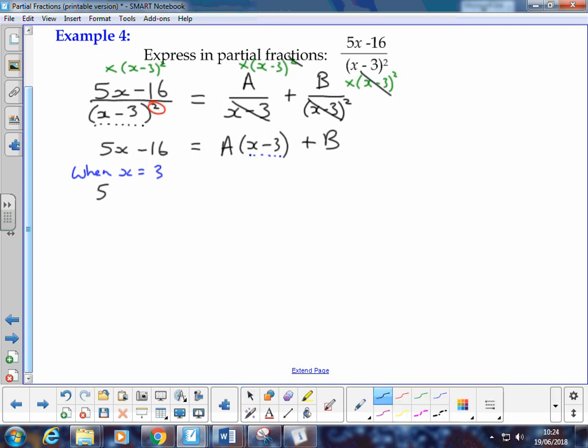When x is 3, we've got 5 times 3 minus 16 on the left, and on the right-hand side, the A times (x - 3) goes to 0, because 3 minus 3 is 0, plus B. So that becomes 15 minus 16 is equivalent to B. 15 minus 16 is negative 1, so we have our value B as being negative 1.